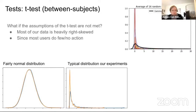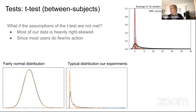This right skew is intuitive because many users simply do very few actions or no action at all. The bottom left shows a fairly normal distribution, the bottom right shows a more typical distribution from their experiments, and the top right shows the average of 16 random control data samples from experiments — with a very heavy tail to the right, not resembling a normal distribution at all.